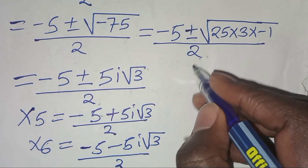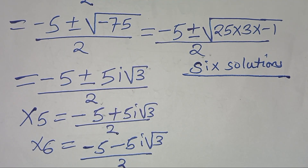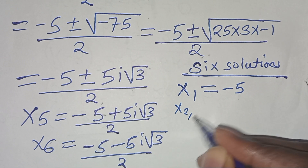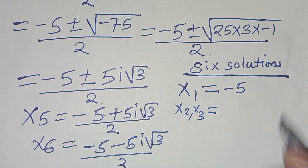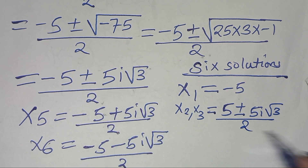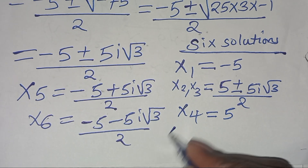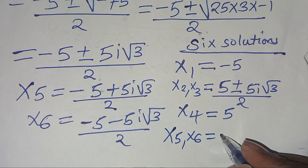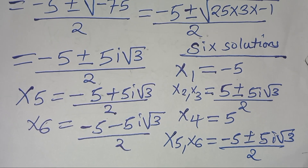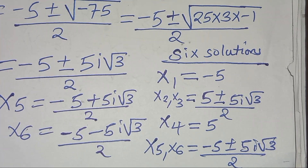So we have 6 solutions in total. x1 equals minus 5; x2 and x3 equal (5 plus or minus 5i√3) divided by 2; x4 equals 5; and x5 and x6 equal (minus 5 plus or minus 5i√3) divided by 2. These are the 6 solutions to this math problem. Thank you for watching, and kindly subscribe.